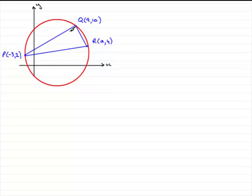So if we know that this is a right angle, all we've got to remember now is that the product of the two gradients, that is the gradient of PQ and the gradient of QR, must come to minus 1.